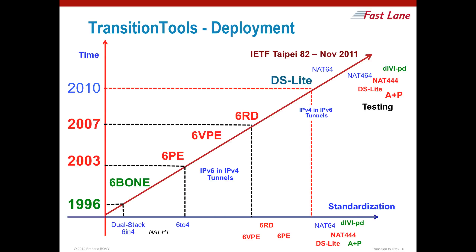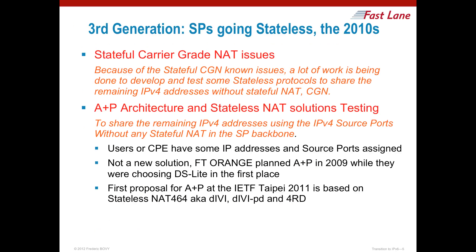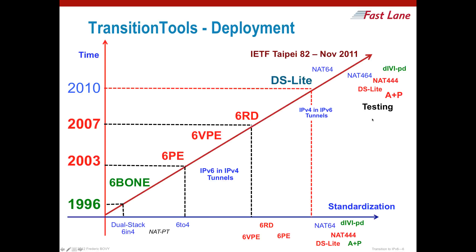Once a service provider has finished the transition and is running a native IPv6 backbone, it may still need to support IPv4 customers. The solution for that is to run DS Lite, which supports IPv4 customers on an IPv6 backbone. Also, for customers who have completely migrated to IPv6 and still need to access IPv4 content, NAT64 will translate IPv6 to IPv4 and permit those customers to access IPv4 content from an IPv6-only network.